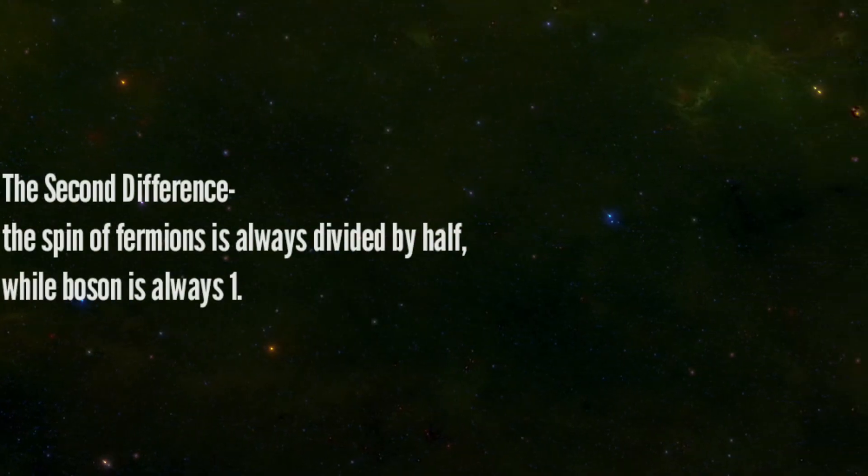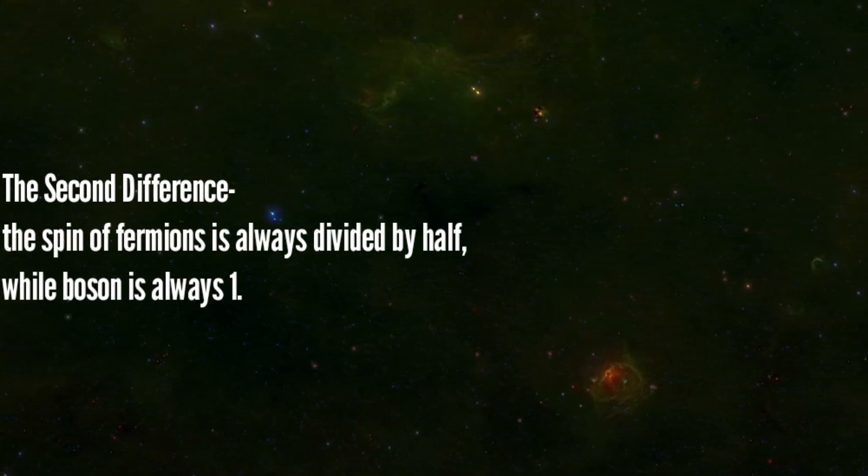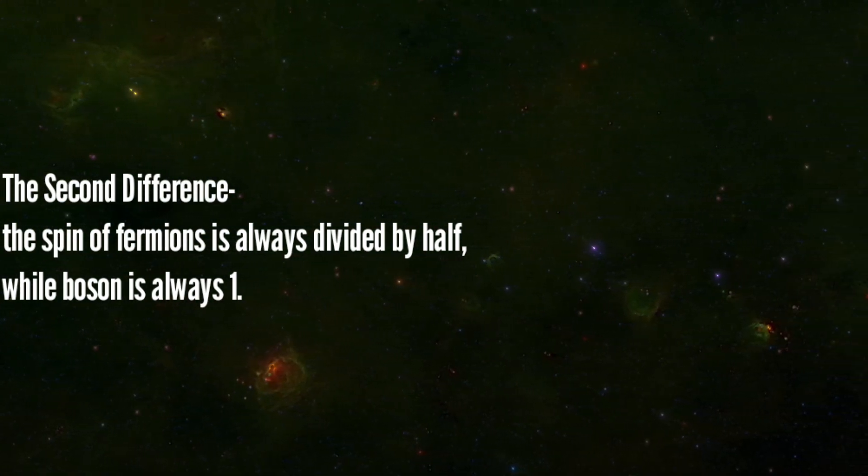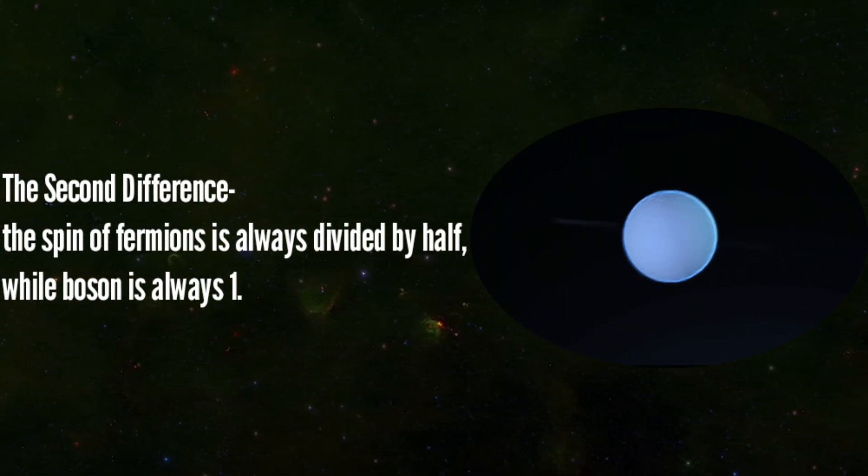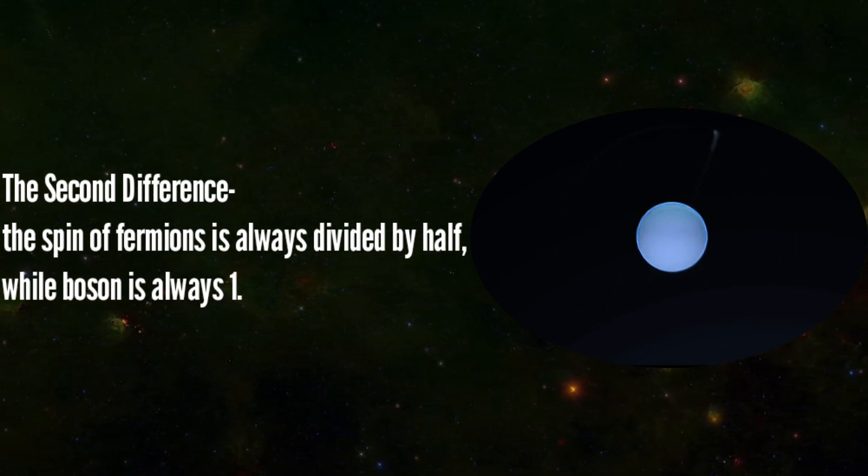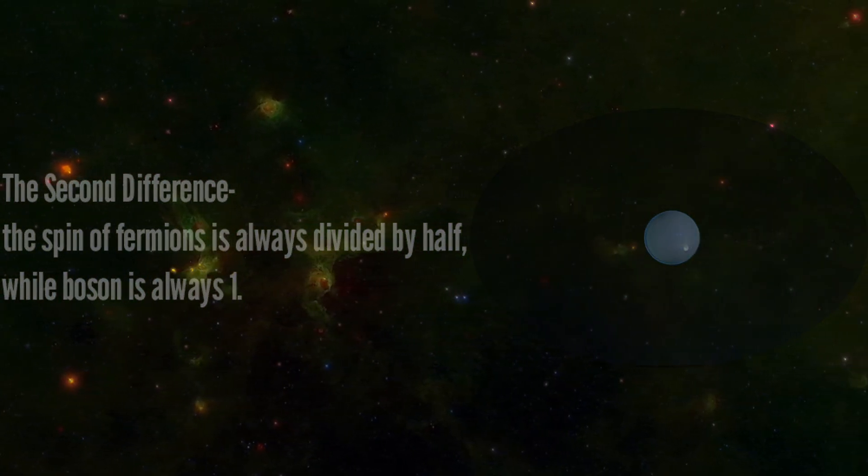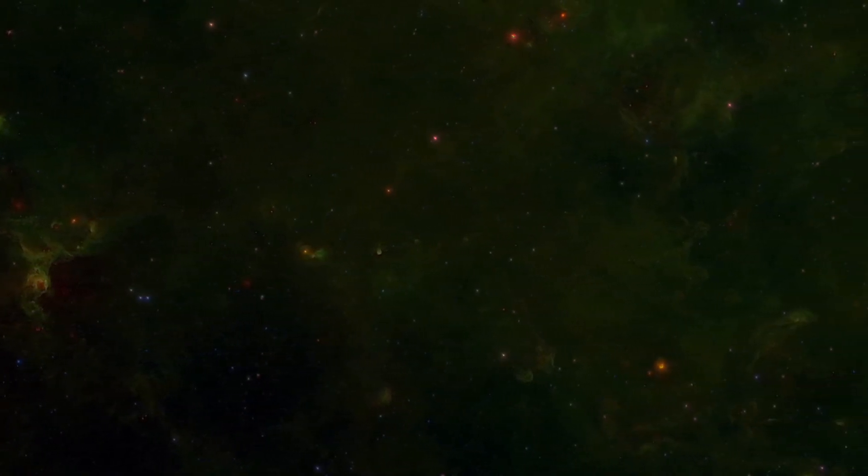The second difference is spin of particle. Boson particle spin is one, which simply means the particle needs to spin one time to return into its first position. It might be bizarre to understand, but fermions particle spin is always divided by half.